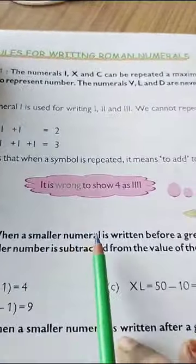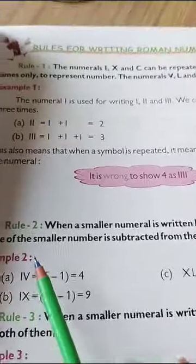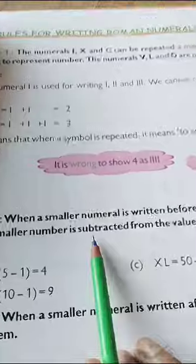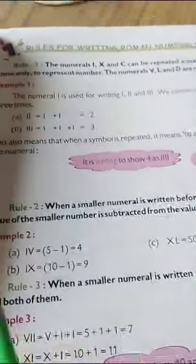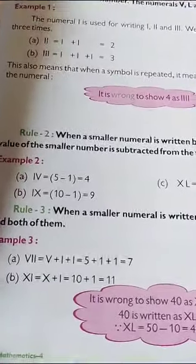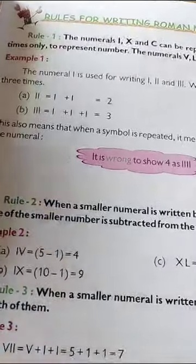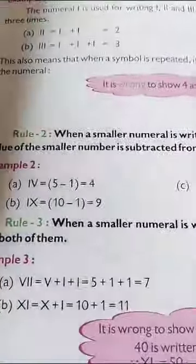It means in rule number 2, it was saying that when a smaller numeral is written before a greater numeral, the value of a smaller number is subtracted from the value of greater numeral. But in rule number 3, it says that when a smaller numeral is written after a greater numeral, we add both of them. It means in rule number 2, we subtract and in rule 3, we add.